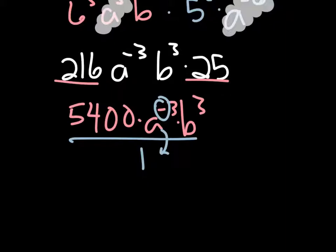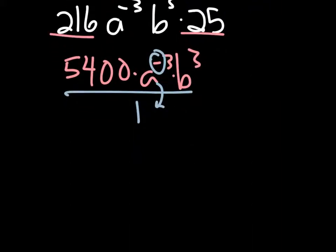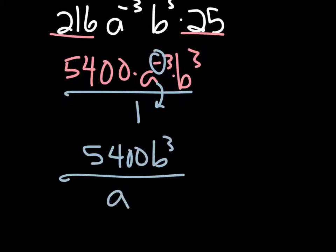So we have 5,400 b cubed in the numerator. The a is going down to the denominator,